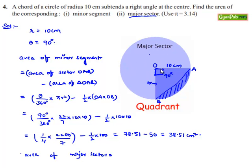As the minor sector is subtending an angle 90 degrees, the major sector will subtend an angle of 360 degrees minus 90 degrees, that is 270 degrees. Therefore, the formula will be theta dash by 360 degrees times pi R squared.